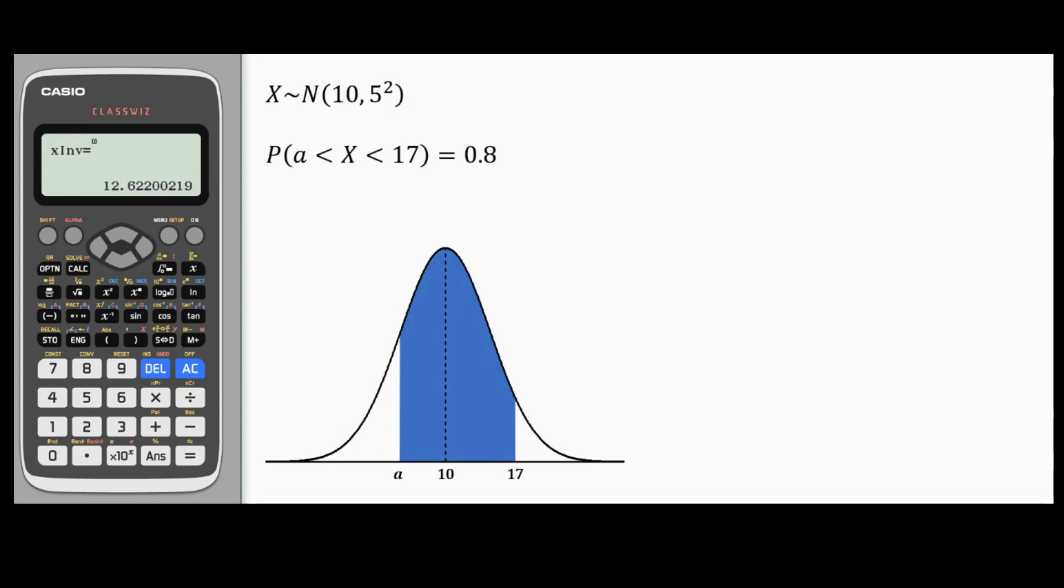I can use a combination of normal CND with the inverse normal to find cutoff points like this one. I can split this probability A less than X less than 17 equals 0.8 as probability X is less than 17 minus probability X less than A equals 0.8. The region to the left of 17 minus the green region will leave me with the area shaded in blue, and that's equal to 0.8. If I rearrange this one, I'm going to get probability X is less than A equals probability X less than 17 minus 0.8.